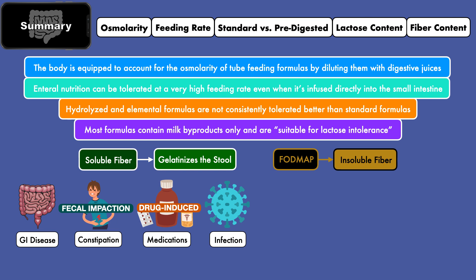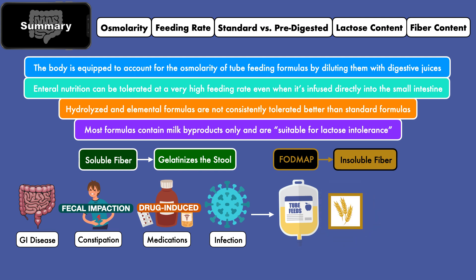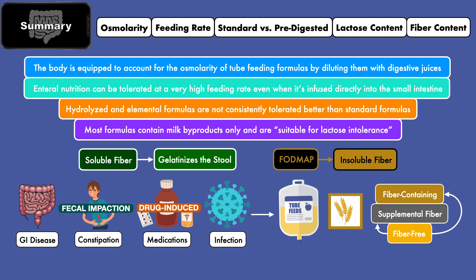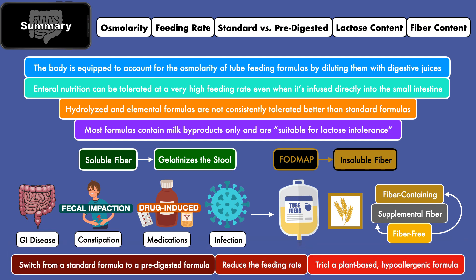Given this information, the following steps should be taken when a patient on enteral nutrition develops diarrhea. First, see if there's an underlying gastrointestinal disease. Second, consider fecal impaction. Third, review the medications list and adjust liquid medications, laxatives, stool softeners, or antibiotics. Fourth, check for any possible sources of infection including C. diff. If diarrhea persists after all of these, look at the fiber content of the formula — switch to fiber-free if fiber-containing, or try soluble fiber if already fiber-free. If all efforts fail, switch to a predigested formula, reduce the feeding rate while maintaining energy load, or trial a plant-based hypoallergenic formula.